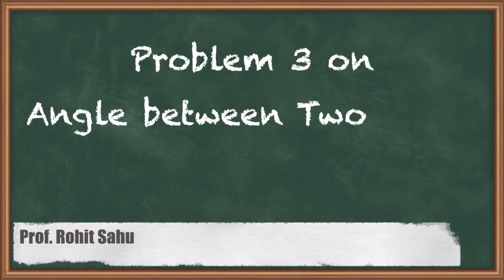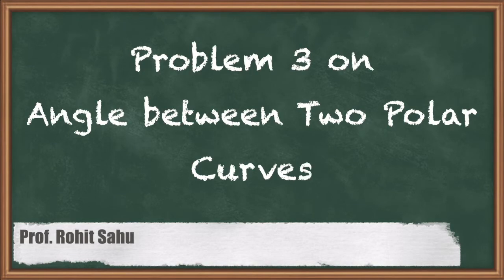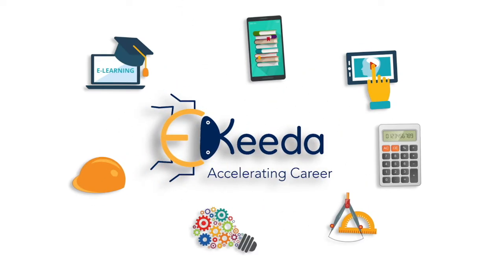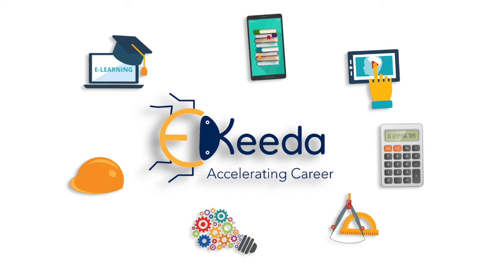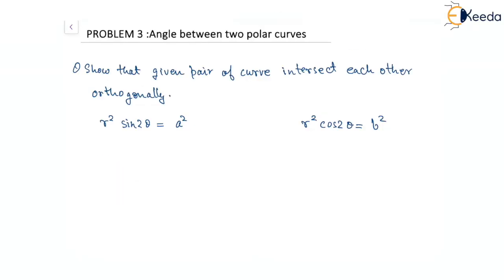Hello everyone. In this session, we'll see the third question on the angle between two polar curves. The question is to show that the given pair of curves intersect each other orthogonally, meaning they intersect at an angle of 90 degrees. The two curves given are r² sin 2θ = a² and r² cos 2θ = b².